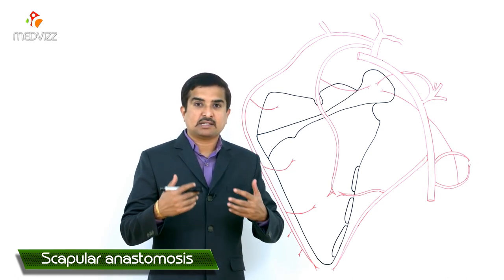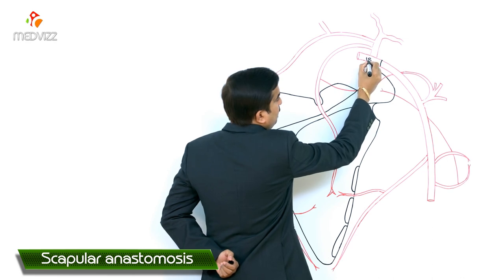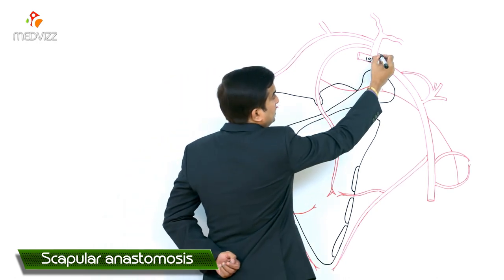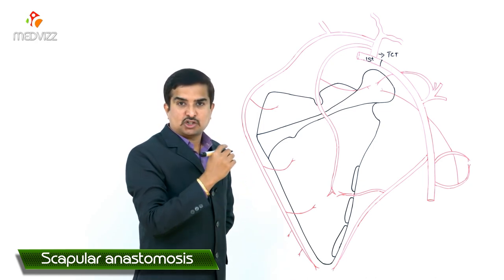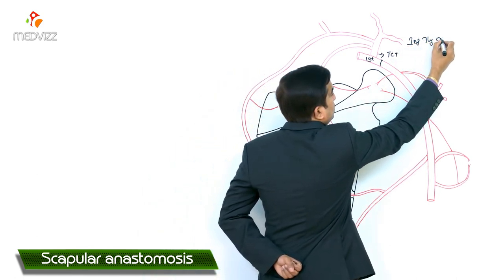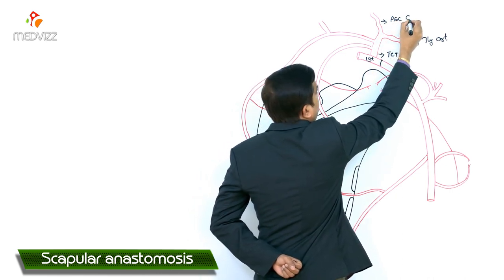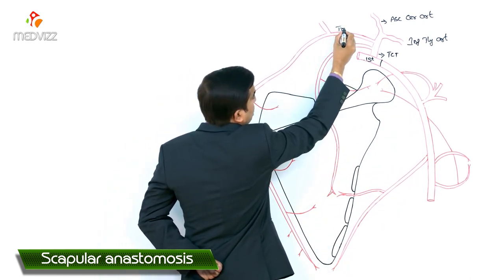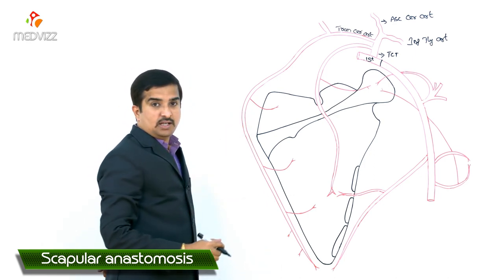The first part of the subclavian artery gives off a branch called the thyrocervical trunk. This thyrocervical trunk gives off totally four branches: one is the inferior thyroid artery, the next is the ascending cervical artery, and another is the transverse cervical artery. The transverse cervical artery gives off two branches.